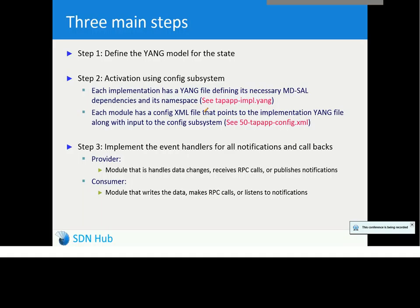Let's look at what building an application means in the context of OpenDaylight. The first thing you do is define the YANG model for whatever state you are going to keep and whatever state you are going to be sending to other modules in the form of a contract. So the first thing you do is model the data structure in YANG. The second thing is to write the code for the activation of your specific application through the config subsystem. Each application you build will have two things: a YANG model that defines the dependencies, namespace, and other aspects relevant for the configuration of that implementation.